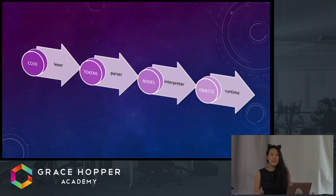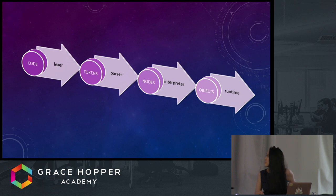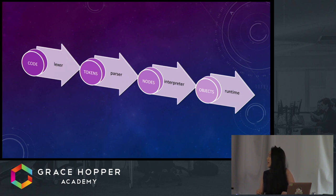The parts of the language can be broken down into four stages and processes: the code, lexing, tokens, parsing, nodes, interpreting or compiling, and finally, objects and runtime.